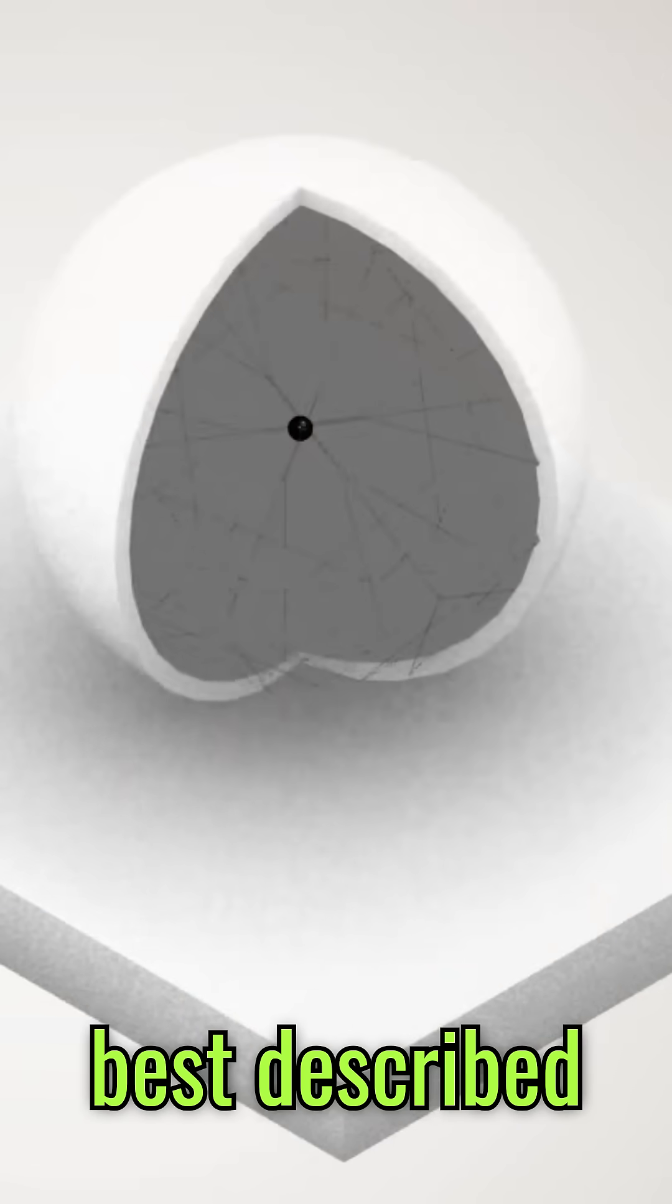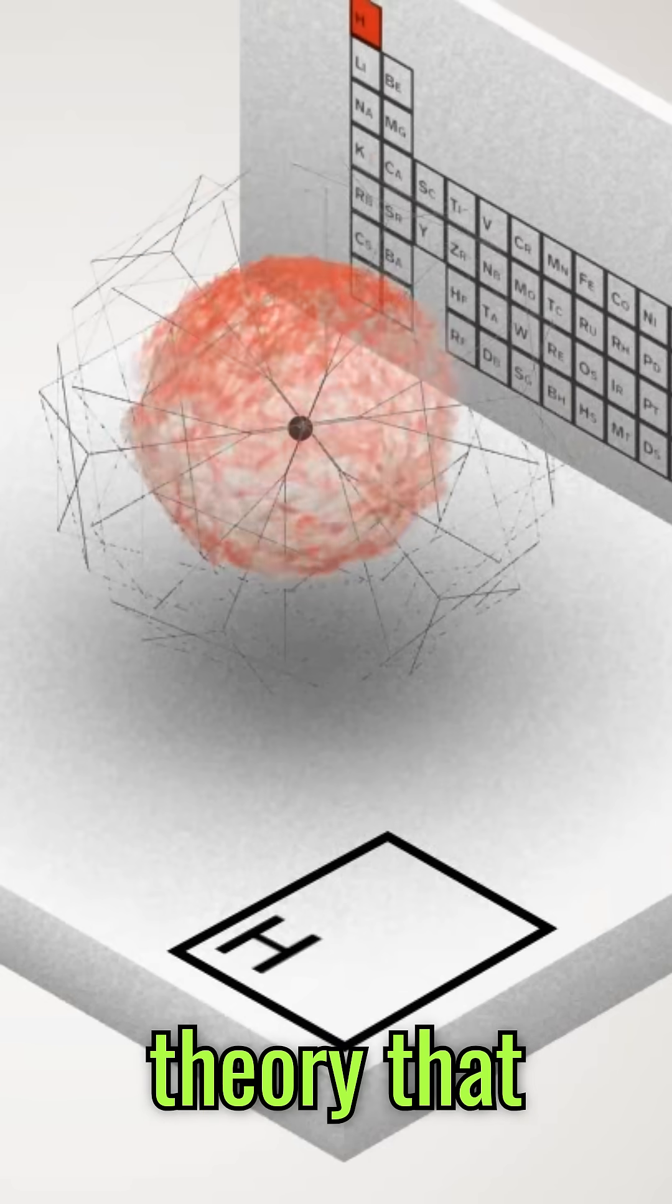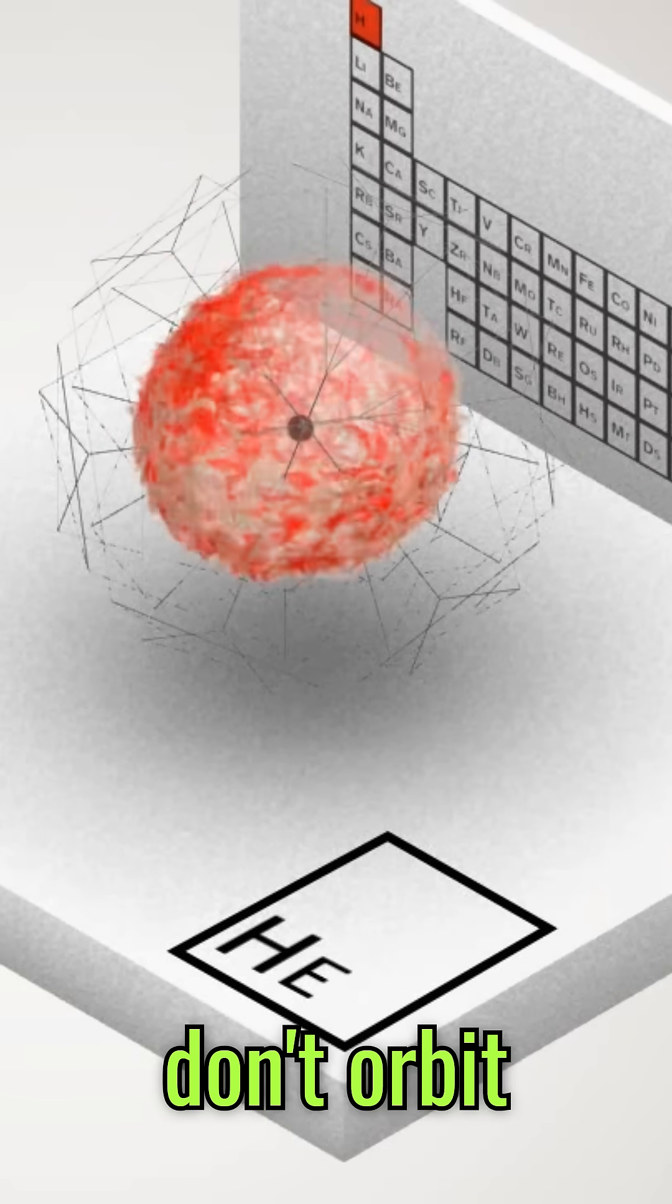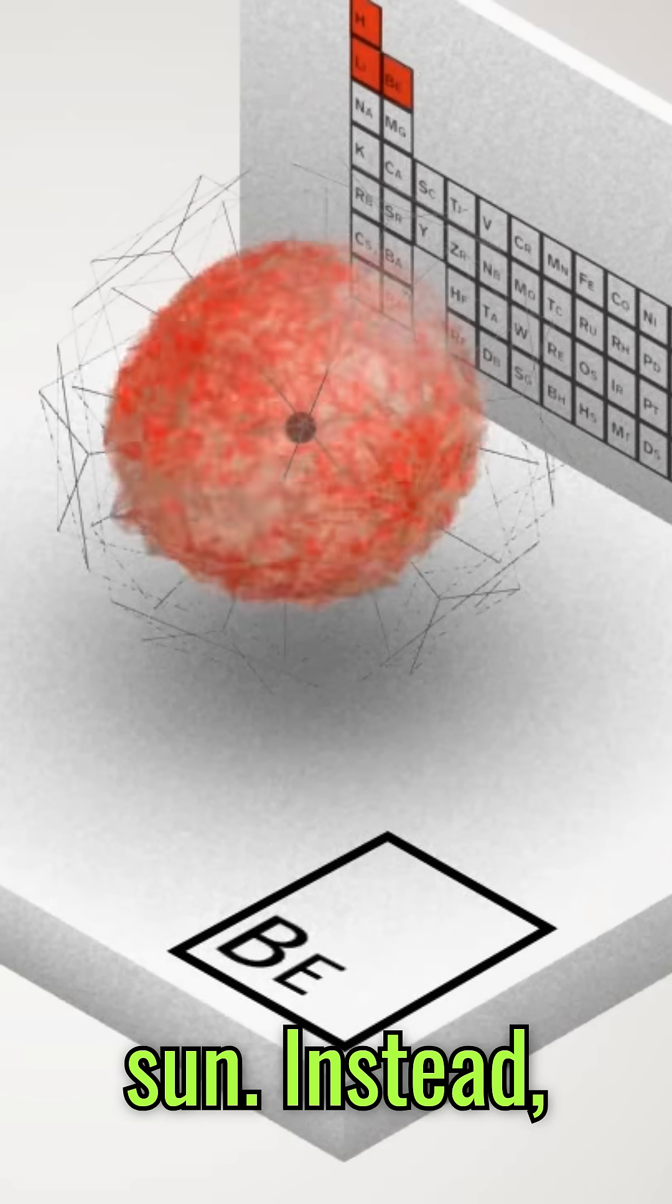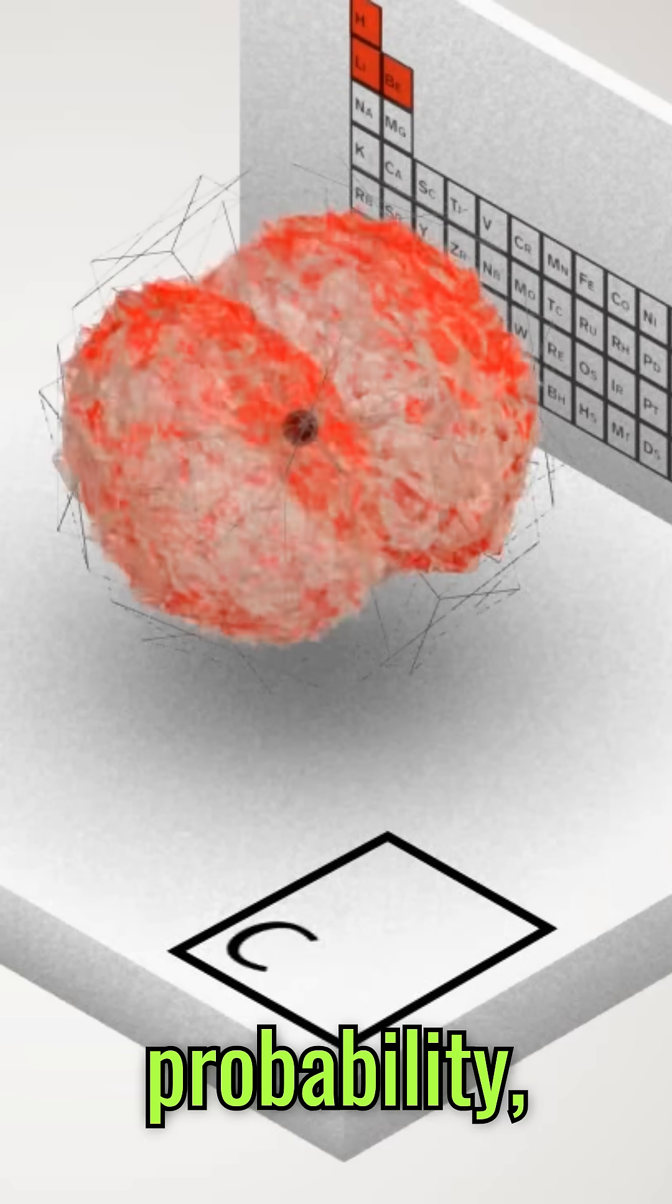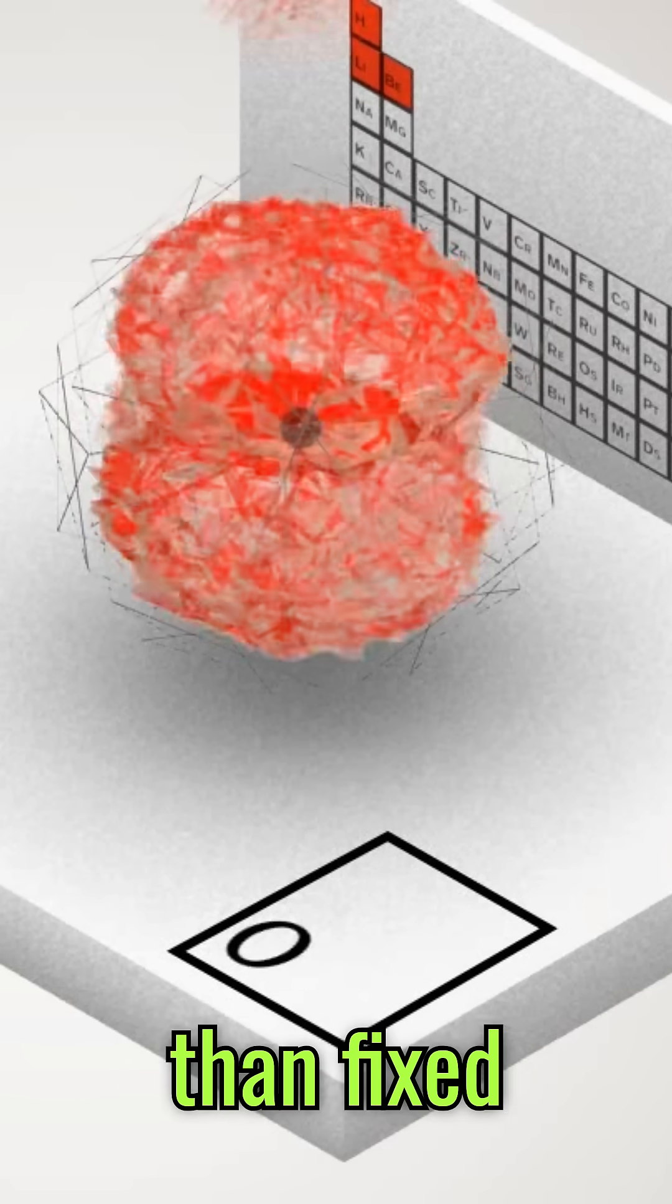The atom's behavior is best described by quantum mechanics, a theory that revolutionized our understanding. In this view, electrons don't orbit like planets around the sun. Instead, they exist in states of probability, appearing as clouds rather than fixed points.